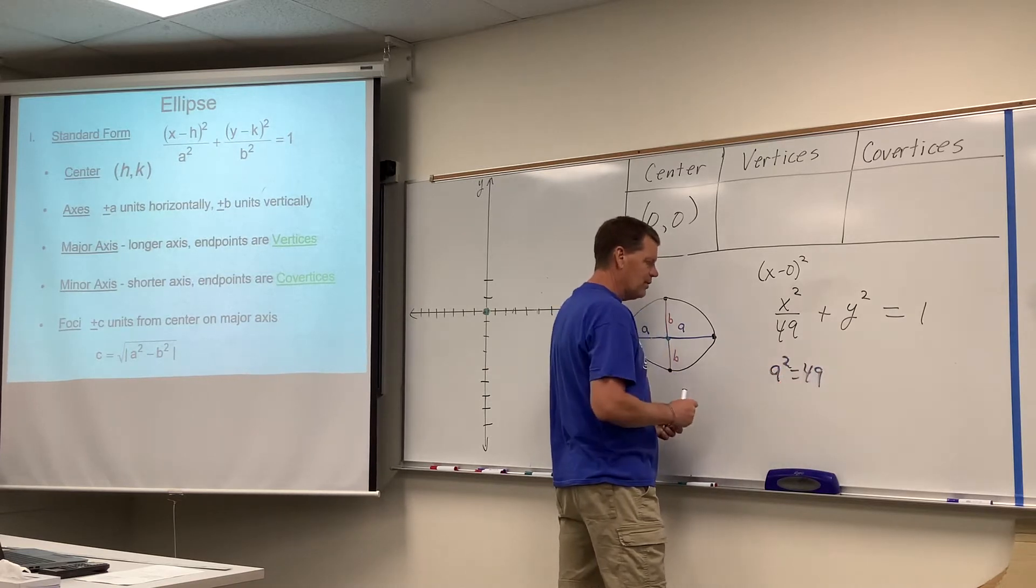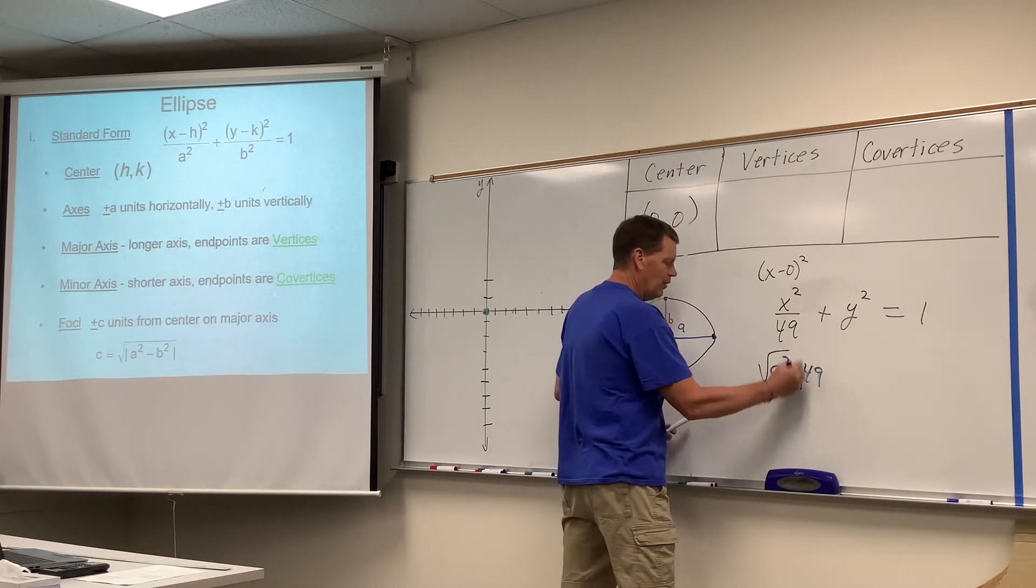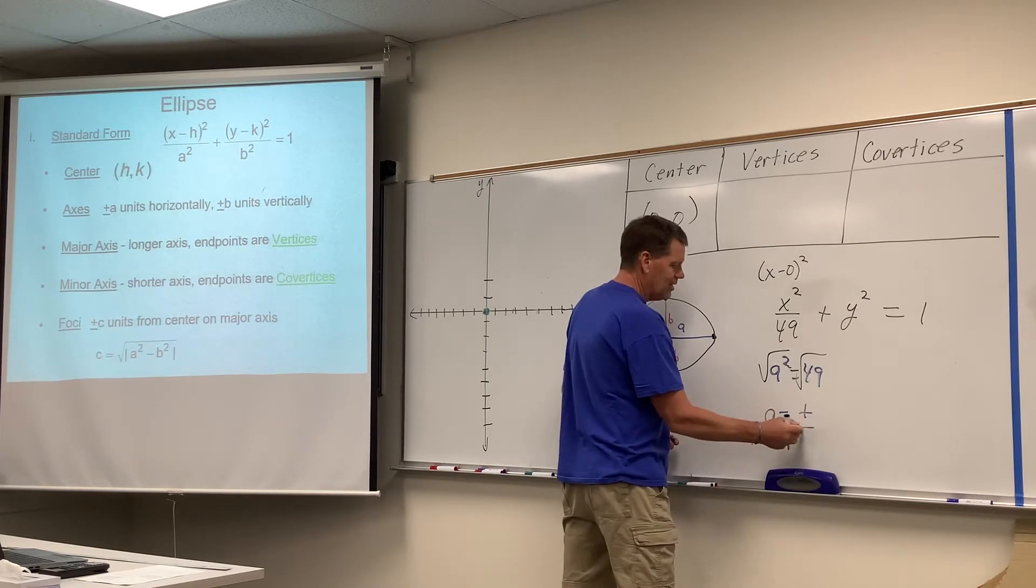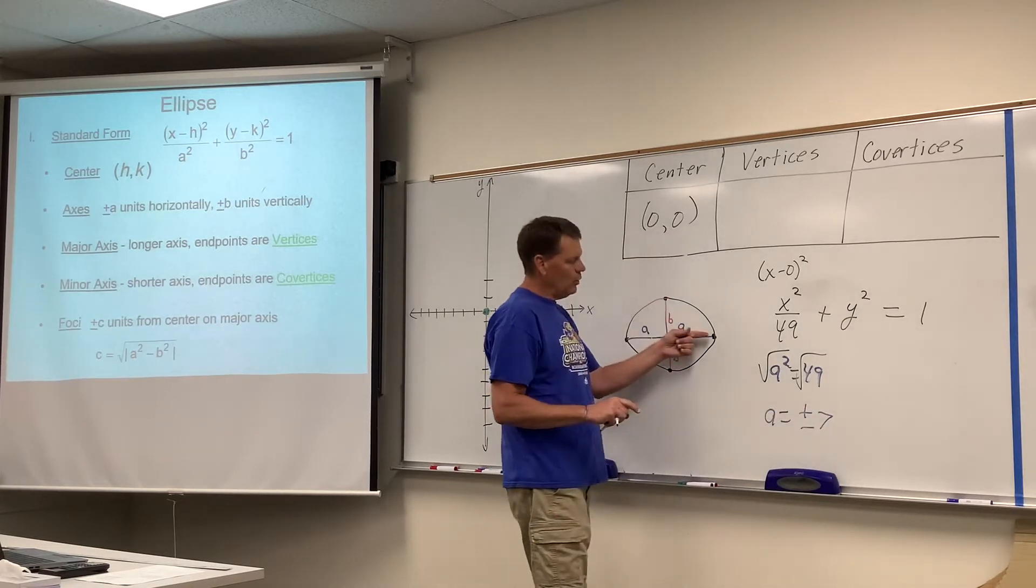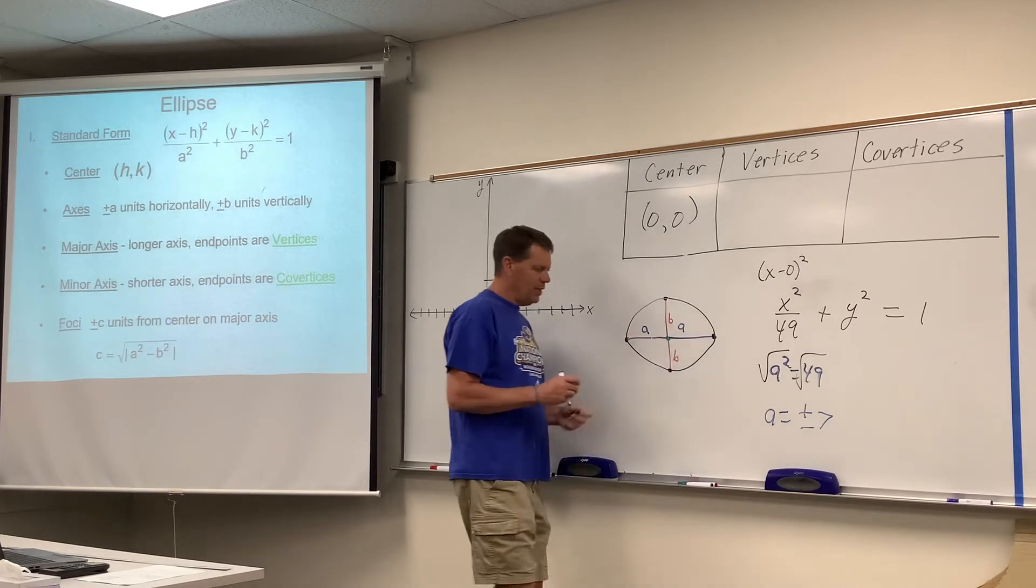So, if a squared is 49, and you square root both sides, a would equal plus or minus 7. And again, the plus 7 would be to the right, and the minus 7 would be to the left.